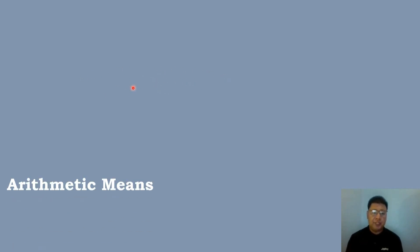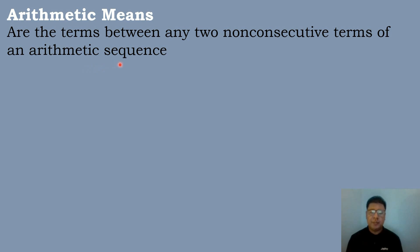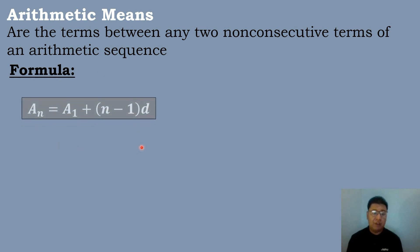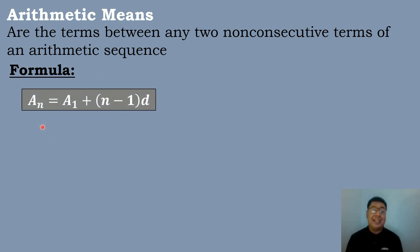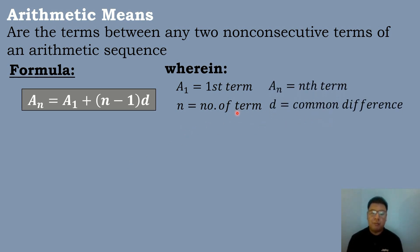So before we start our lesson, let us define first what arithmetic means are. Arithmetic means are the terms between any two non-consecutive terms of an arithmetic sequence. We will also use the formula of the arithmetic sequence: a sub n is equal to a sub 1 plus quantity n minus 1 times the common difference, where a sub 1 is the first term, n is the number of terms, a sub n is the nth term, and d is the common difference.